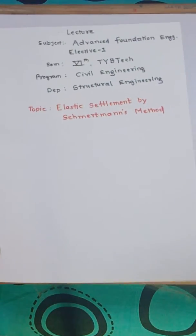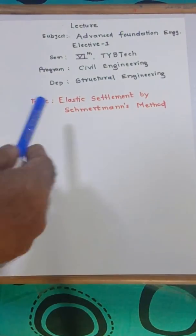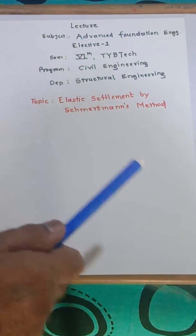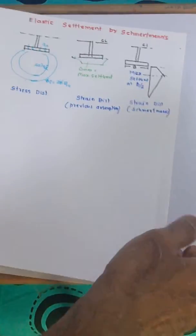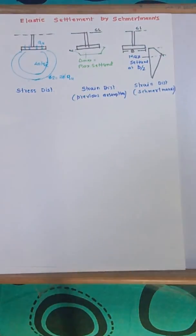So we start with our lecture on the elastic settlement by Schmertmann method. In this method, as we discussed earlier, I'm revising that you'll find that a stress distribution according to the Boussinesq theory.